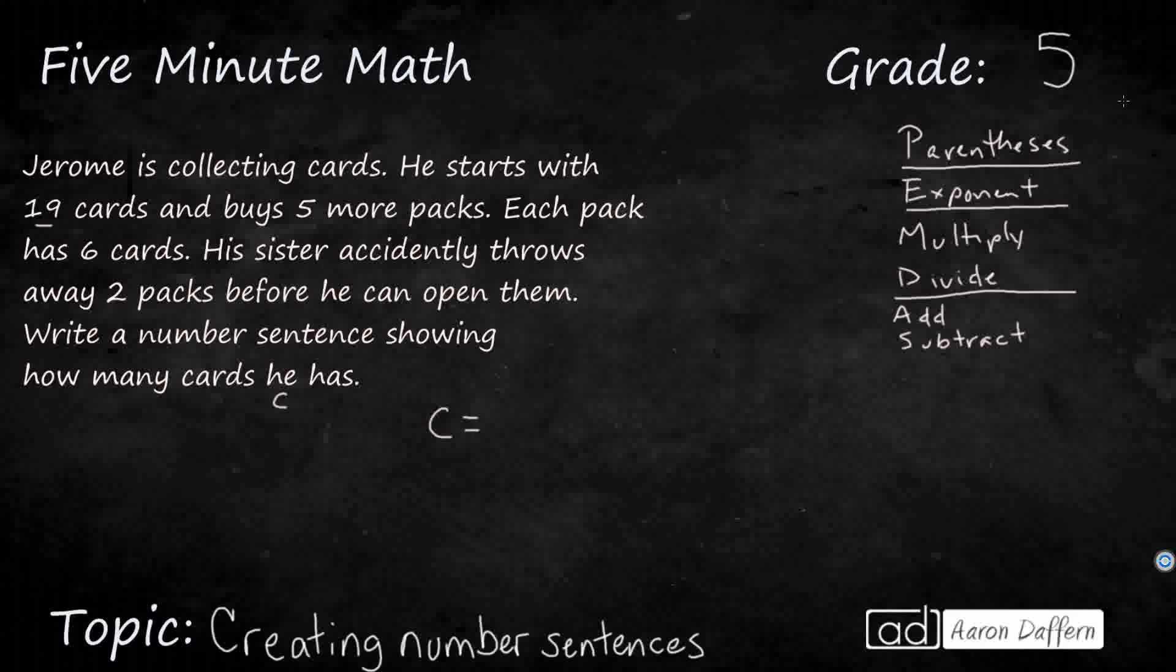He's going to start with 19. So that's pretty simple. It's going to be 19 plus buys 5 more packs. Each pack has 6 cards. So what we need is we need a 5 times 6, because that's going to get you 30, but we want to show that in order of operations, 5 times 6. You don't honestly need parentheses here because you would end up multiplying before you add, so we'll leave it just like this.